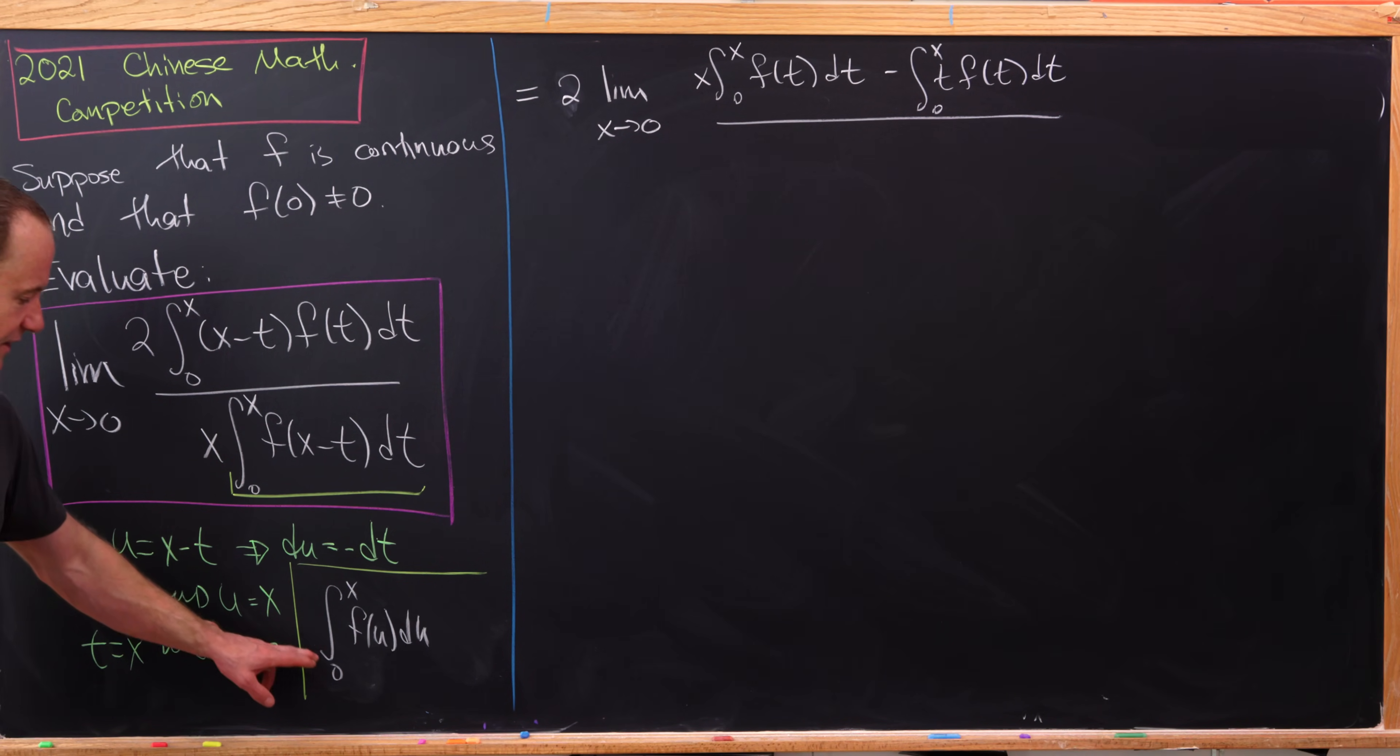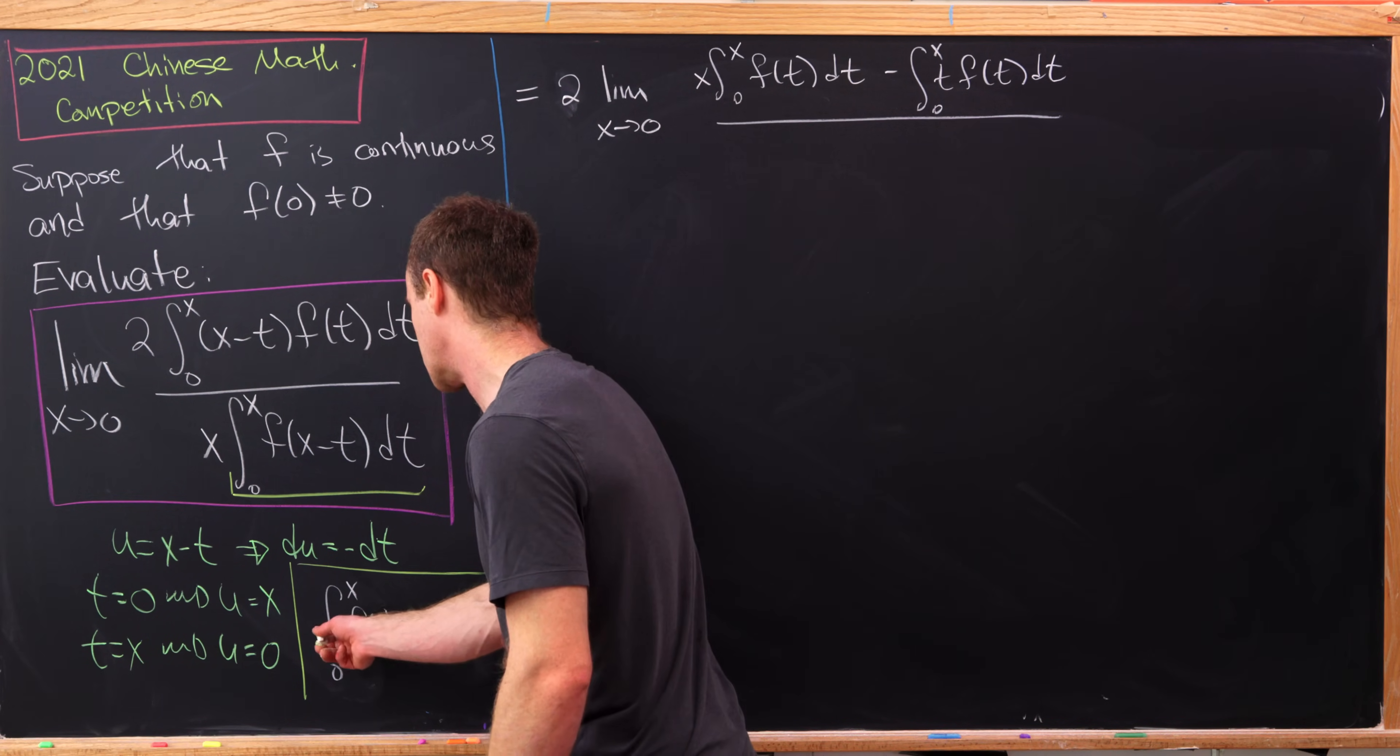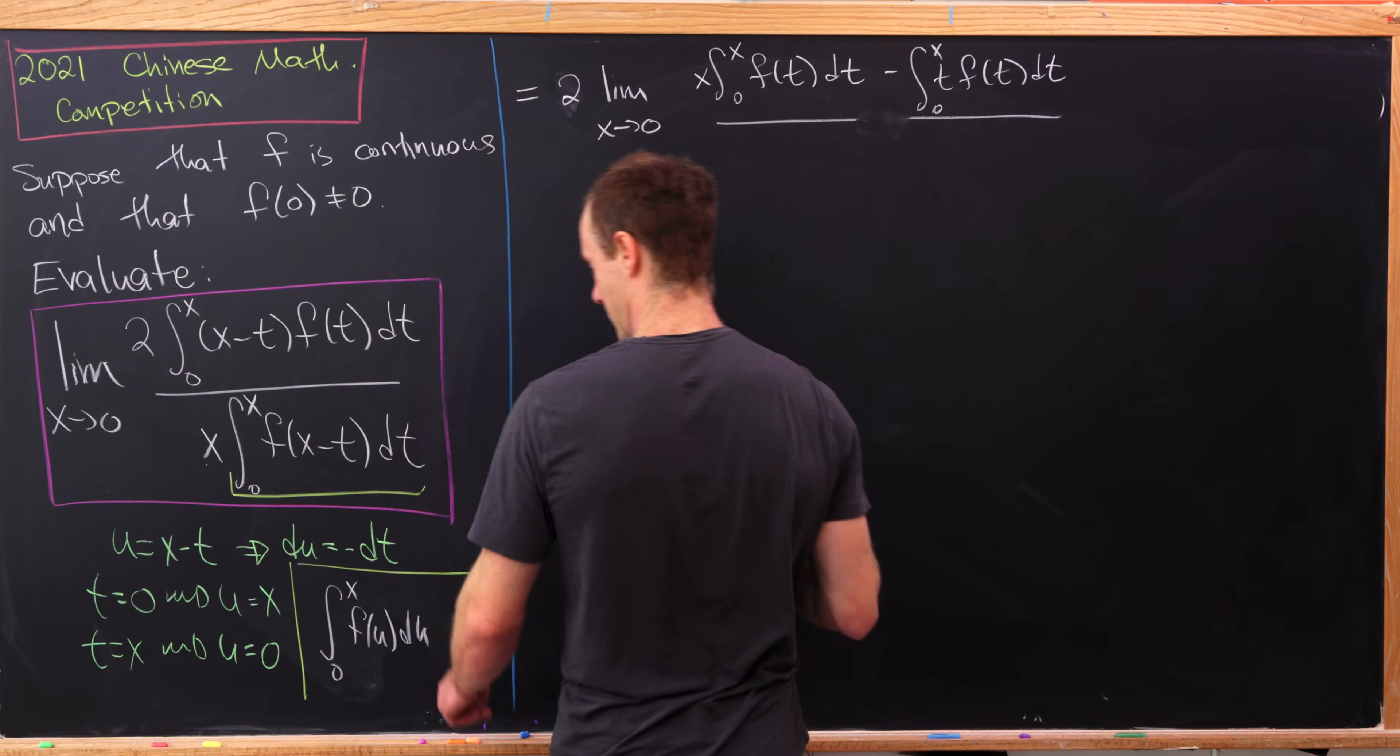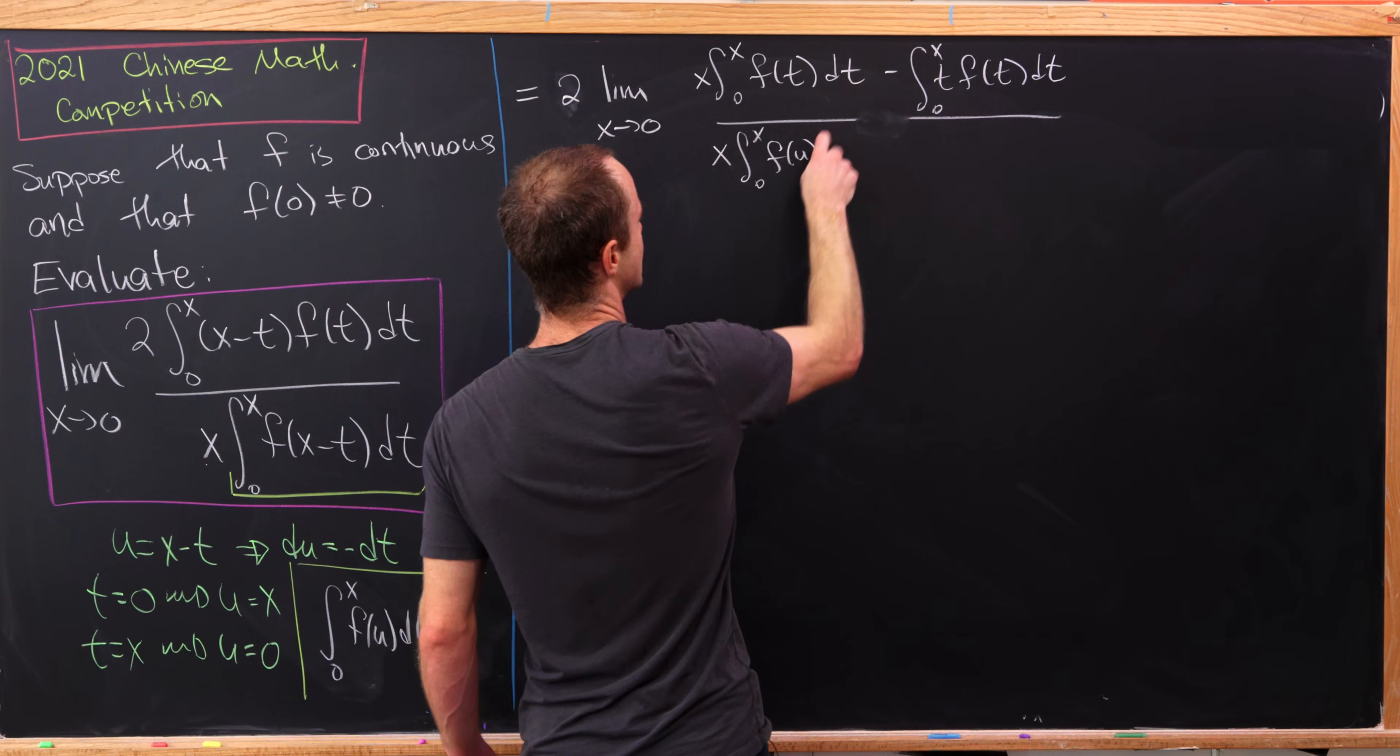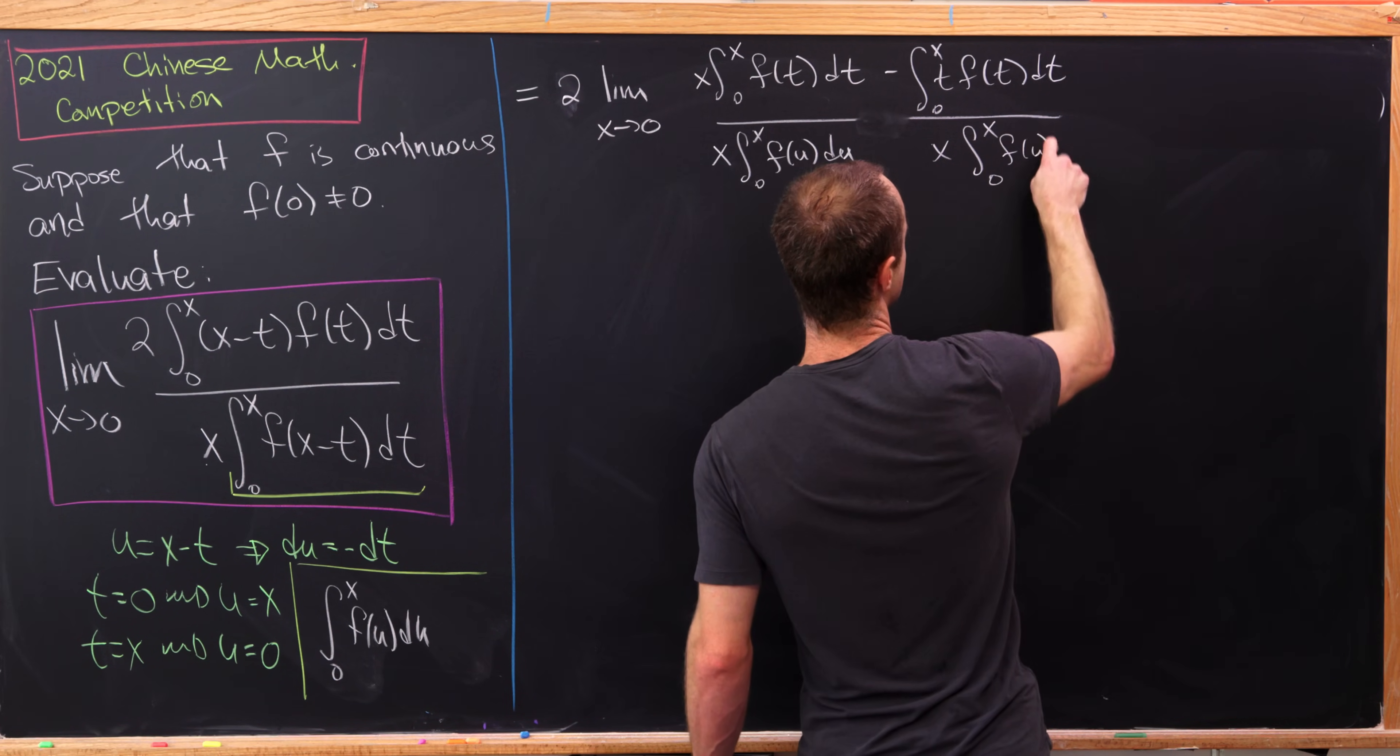And then the denominator is this integral from zero to x of f of u du. So I'm going to go ahead and notice that this is going to include a multiplication by x from right there. So I'm going to split this up and I'll put this in the denominator of both. So I have x integral from zero to x of f of u du and then x integral from zero to x of another f of u du.